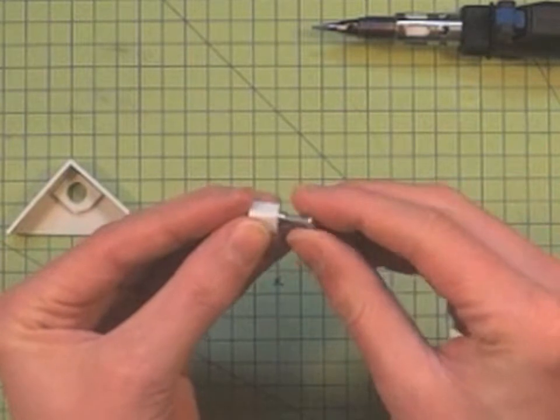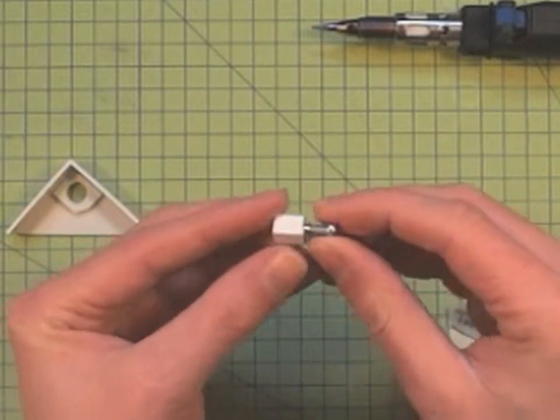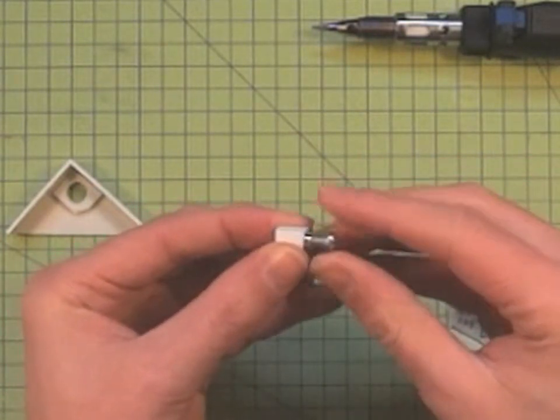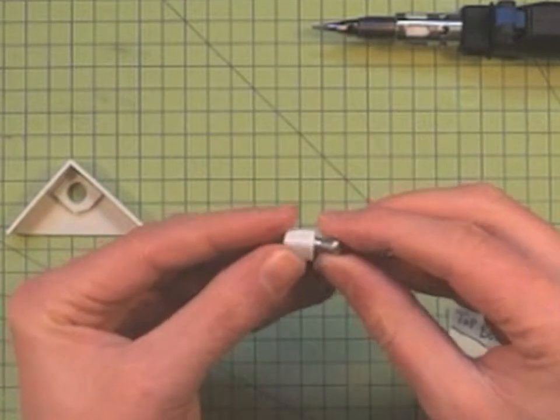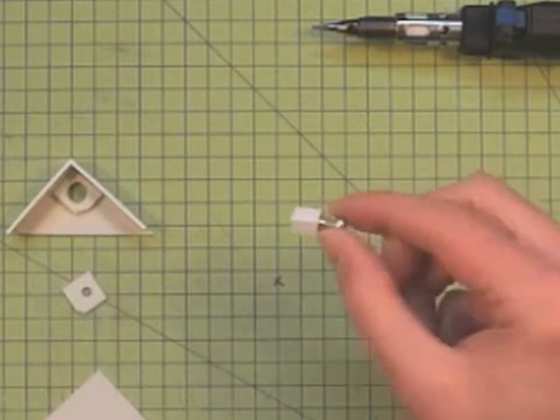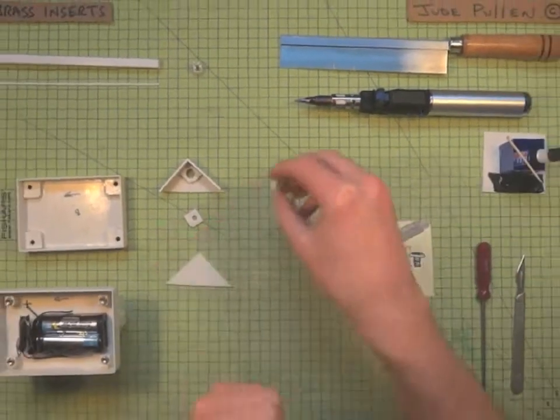Now again, it's a good idea to have the screw handy, because what you can do while it's still hot, and it will stay hot for quite some time, is you can just check that it's nice and straight. And also the bolt, as it probably will be cold, will also take any of the excess heat out of it. So what we've got now is basically that little component ready to go in there.